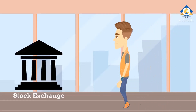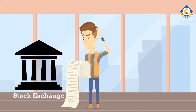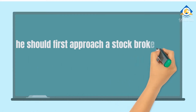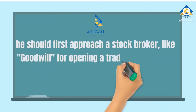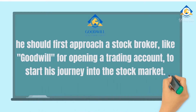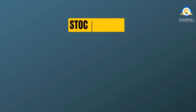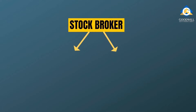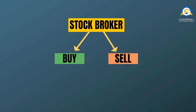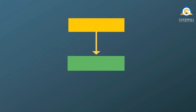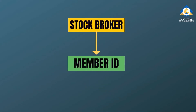Rahul finds out that he cannot approach the major stock exchanges in India directly. He should first approach a stock broker, like Goodwill, for opening a trading account to start his journey into the stock market. A stock broker is a market intermediary who is responsible for placing the buy and sell order in the market on behalf of the client. A broker is identifiable by a unique ID called member ID, provided by the stock exchanges.